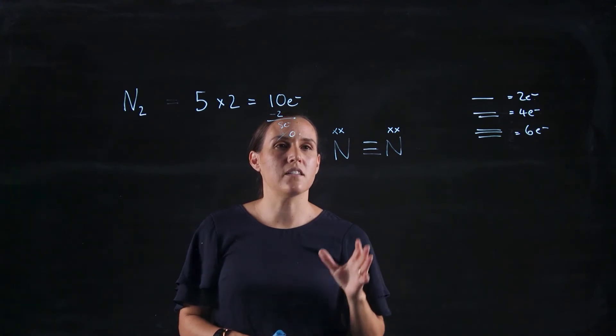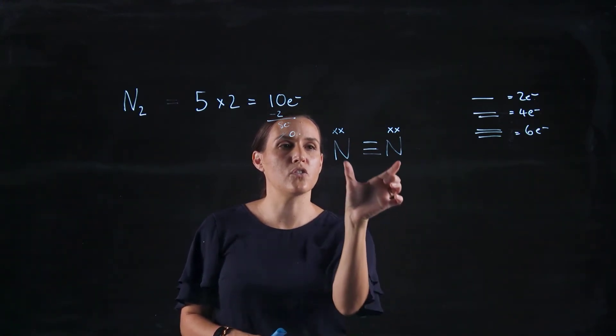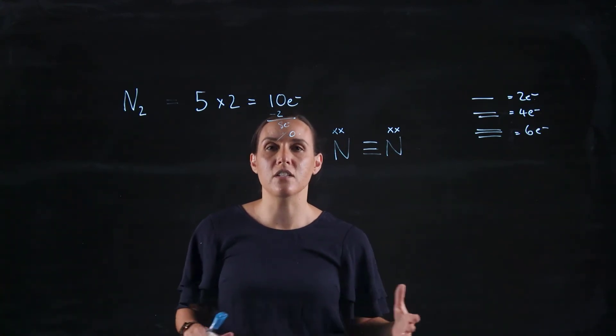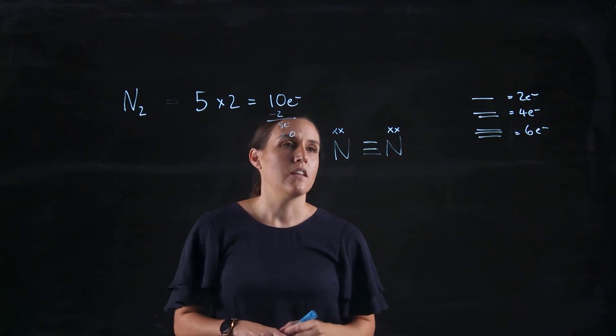Now, if you want to think about the shape of this one, so we've got two single atoms that are connected. So this is going to be a linear shape. So whenever you've got two atoms, they're going to be in that linear shape. So this is linear.